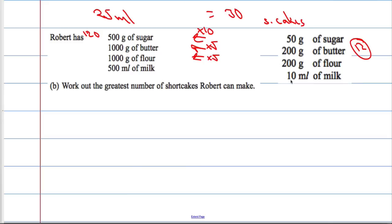And then 10ml of milk, 500ml of milk, that is 50 times. So he could make 50 times as many as the recipe tells you.